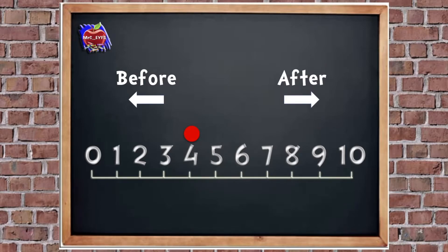One more go. Number eight — is zero before or after number eight? Yes, before. Good job. It's right at the bottom of our number line, right at the beginning. Well done.